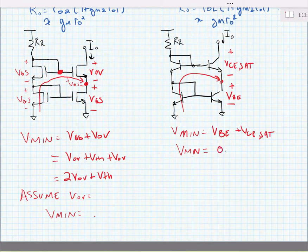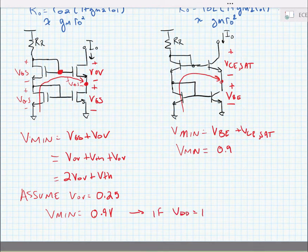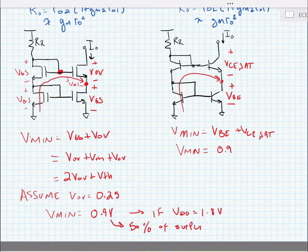Now let's assume that our VOV for the MOS case needs to be about 0.25 volts. This means that our Vmin is equal to 0.9 volts. If VDD is equal to 1.8 volts, this is 50 percent of the supply rail. That's quite a high voltage and a penalty to pay, especially considering that what we would expect would be that our output voltage would only need to be two times VOV. Instead here it's two times VOV plus a VTH. So really we've got an extra VTH.